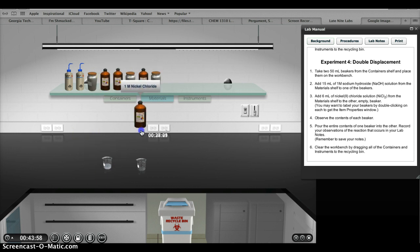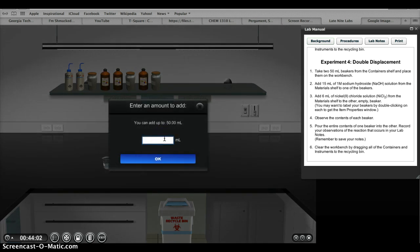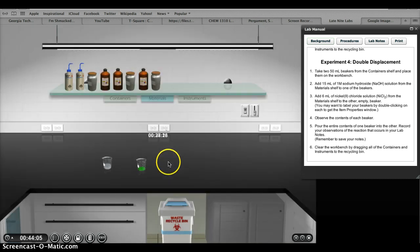And we'll add 6 milliliters of nickel chloride. And it's also clear, and it's green.